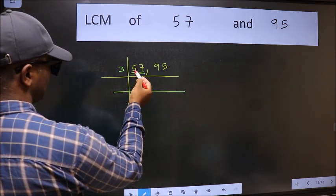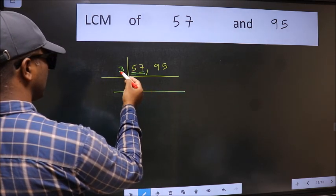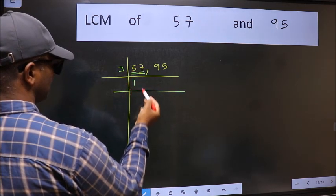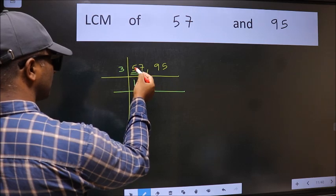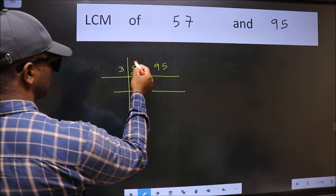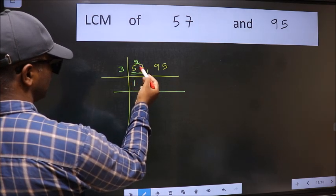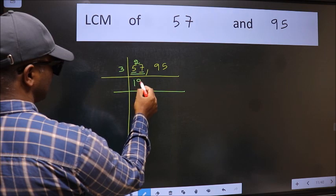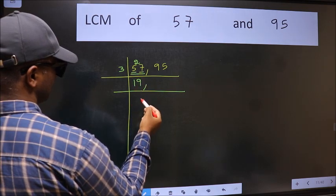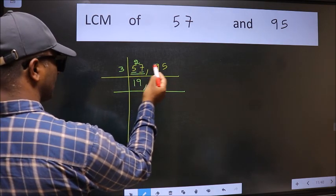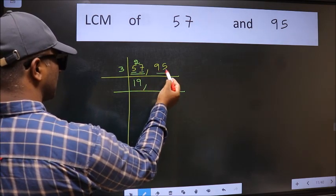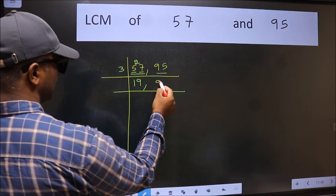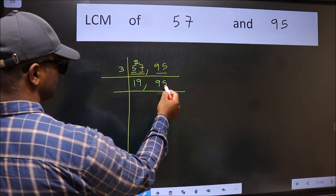First number 5 — the closest number to 5 in the 3 times table is 3 ones 3. 5 minus 3 is 2, carried forward: 27. When do we get 27 in the 3 table? 3 nines are 27. The other number 95 is not divisible by 3, so you write it down as it is.